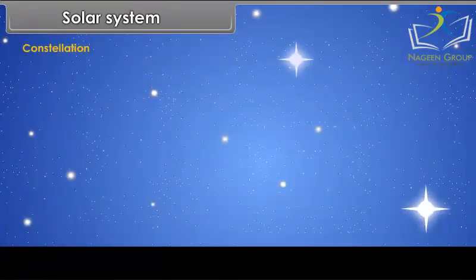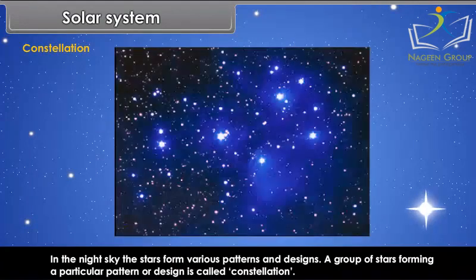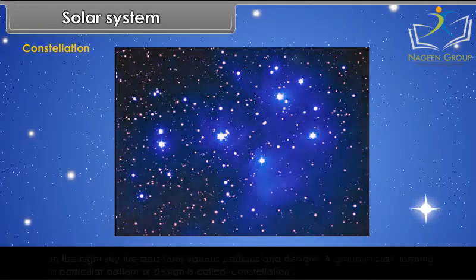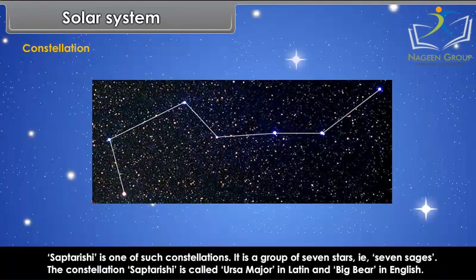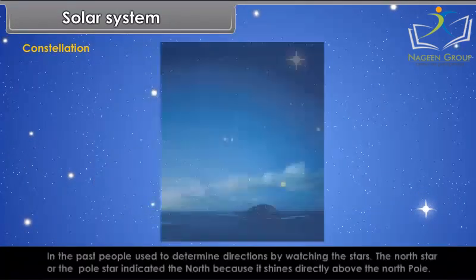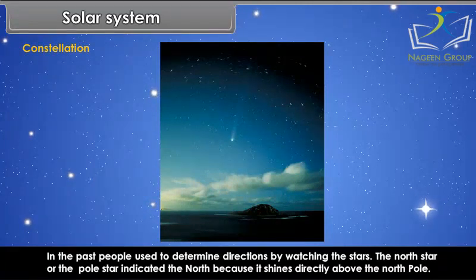In the night sky, the stars form various patterns and designs. A group of stars forming a particular pattern or design is called a constellation. Saptarashi is one such constellation — a group of seven stars, meaning seven sages. It is called Ursa Major in Latin and Big Bear in English. In the past, people used to determine directions by watching the stars. The North Star or the Pole Star indicated the North because it shines directly above the North Pole.